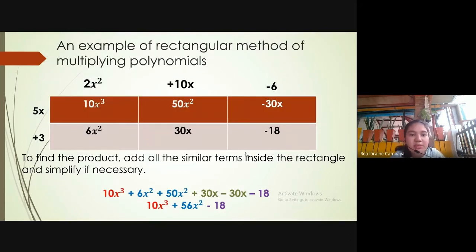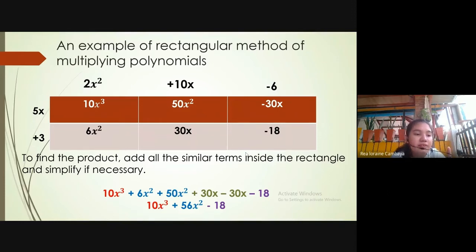An example of the rectangular method of multiplying polynomials. We multiply positive 5x by positive 2x squared; the result is 10x cubed. Then we multiply 5x by positive 10x; the result is 50x squared. We multiply 5x by negative 6; the result is negative 30x.